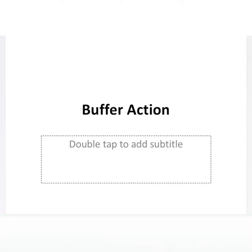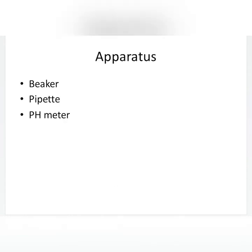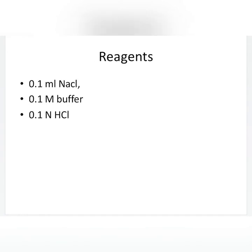Assalamu alaikum, let us start with buffer action. The apparatus we need for this practical is a beaker, a pipette, and a pH meter. The reagents used are 0.1 M NaCl, 0.1 M buffer, and 0.1 N HCl.